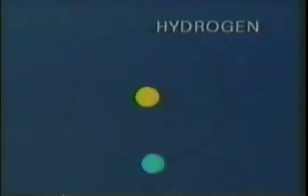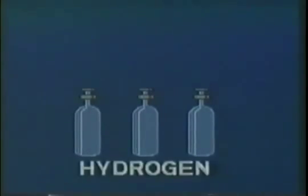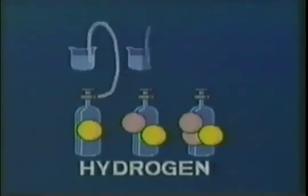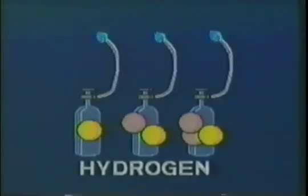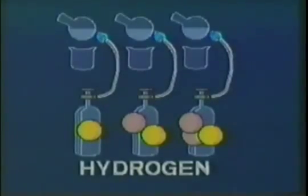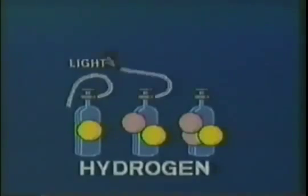If an atom has only one proton in its nucleus, that atom is hydrogen, whether the nucleus has no neutrons, one neutron, or two neutrons. All three of these types of hydrogen, or isotopes, have very similar physical properties and identical chemical properties. They exist as clear, colorless gases. They burn with a very pale blue flame to form water. They differ only in physical properties that involve mass.